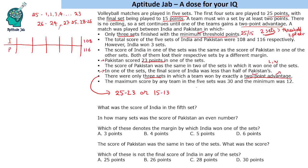The maximum score by any team in the five sets was 30 and the minimum was 12. When we say maximum 30, the definite score line is 30-28. When we say minimum 12, we cannot determine the other score immediately. The 30-28 score applies because once it goes beyond the threshold limit, it has to be a two-point advantage.